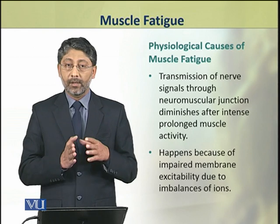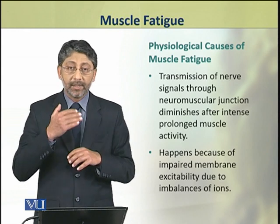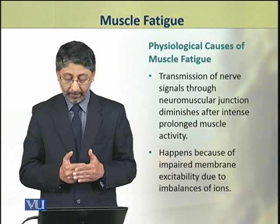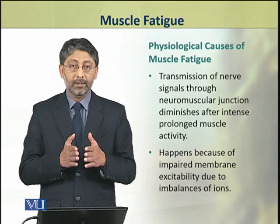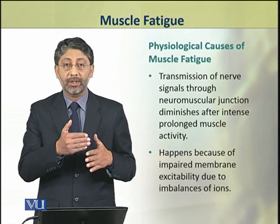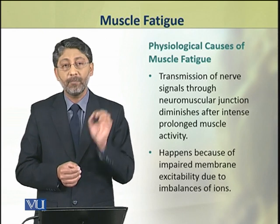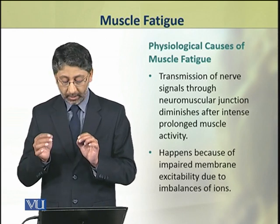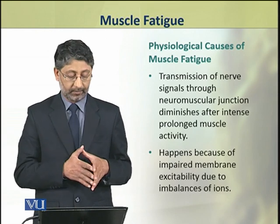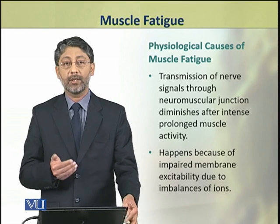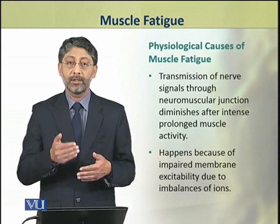First, we shall discuss the neuromuscular junction. The transmission of nerve impulses is impaired due to ion imbalances. As a result, impairment of excitability of the membrane occurs. When there are ion imbalances, the excitability of the membrane is reduced. As a result, the nerve impulses are slow and diminishing.